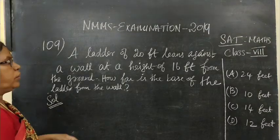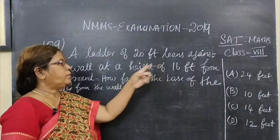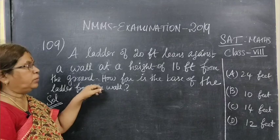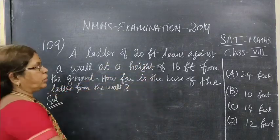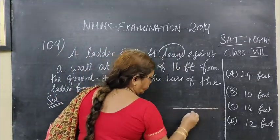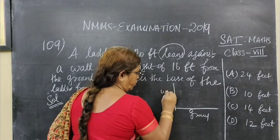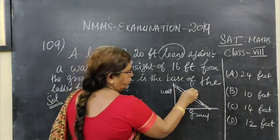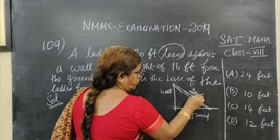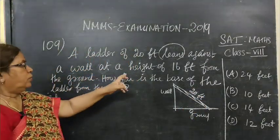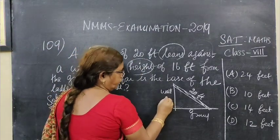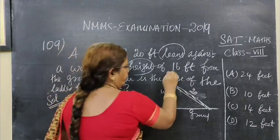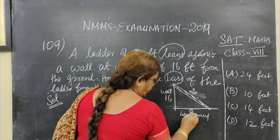Now question number 109. A ladder of 20 feet leans against a wall at a height of 16 feet from the ground level. So this is the ground level, then this is the wall. A ladder of 20 feet — this is the measurement of 20 feet. Then the height is 16 feet. You want to find how far is the base.